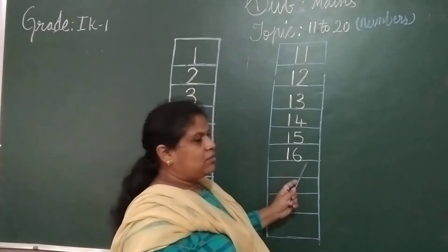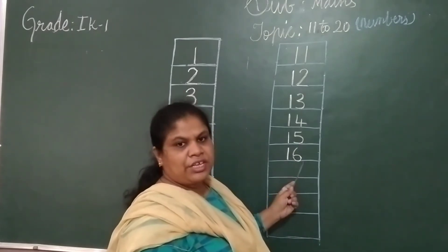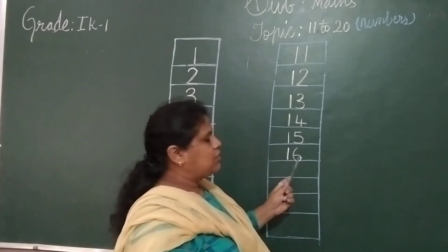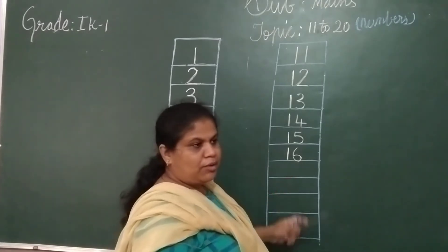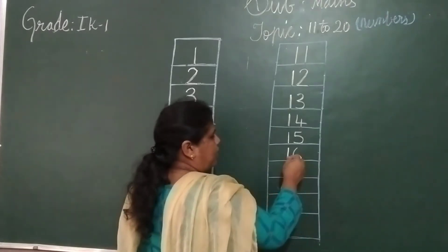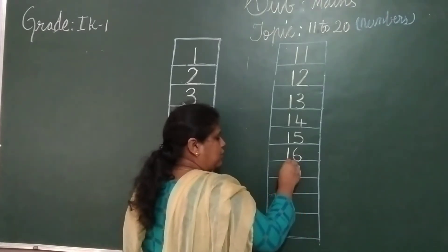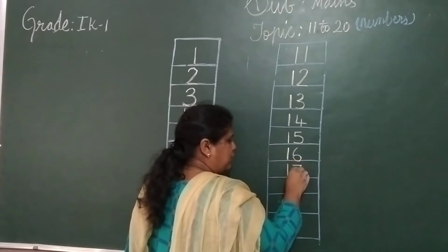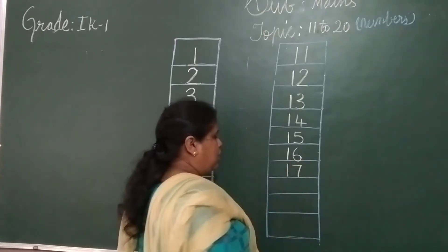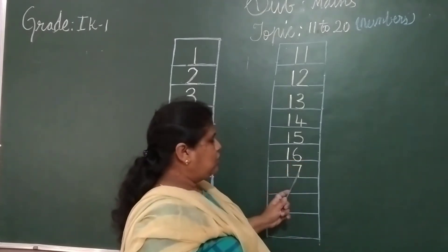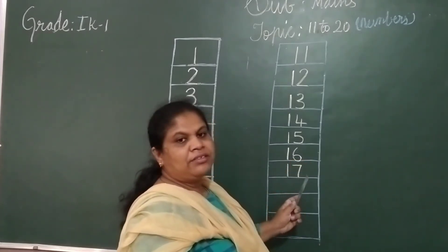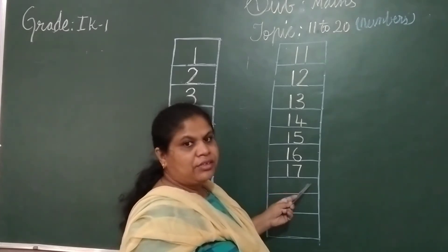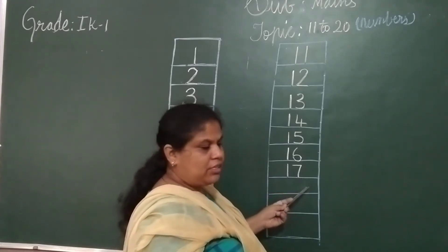Next. One, six — 16. One, six — 16. After 16 it is 17. One, seven — 17. One, seven — 17.